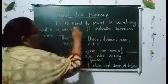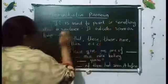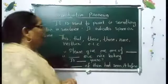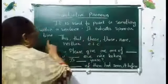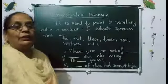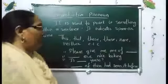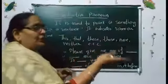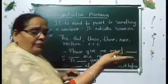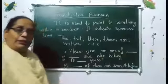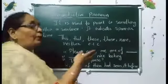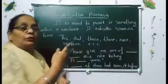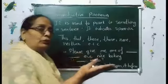Next is demonstrative pronoun. It is used to point something in a sentence — it indicates space or time. If something is far away, we say 'that.' If it is nearby, we say 'this.' If there are many things nearby, we say 'these.' If many things are far away, we say 'those.'